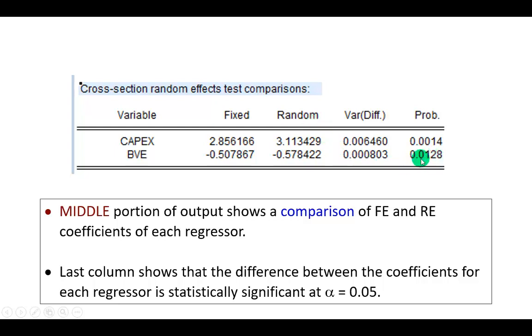And at the 5% level of significance we reject the null hypothesis that the book value of equity coefficients are the same for the two models.